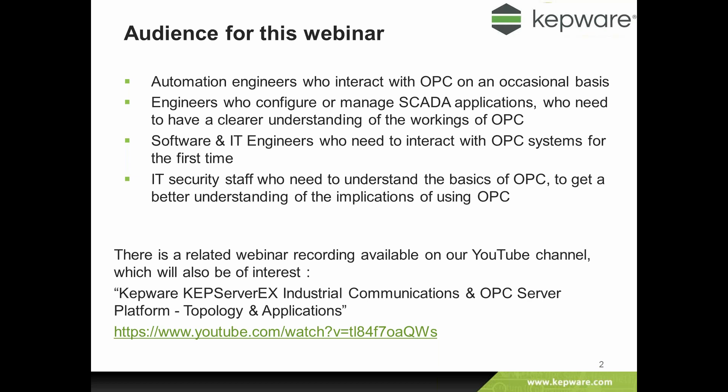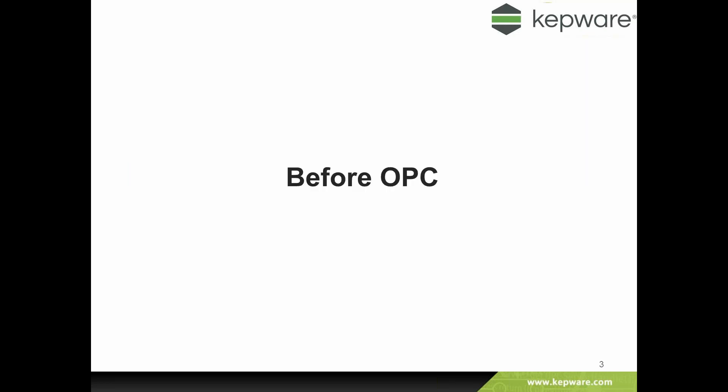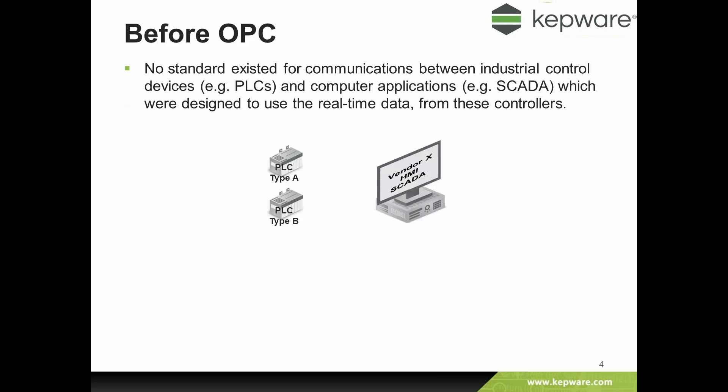So what was the picture like before OPC came along? Before OPC, there was no standard communications between industrial devices — for instance, PLCs and applications that needed to use real-time data from the shop floor and visualize it, log it, or consume it in some fashion. Each manufacturer of the software had to create their own native drivers for the various different types of hardware found on the shop floor.